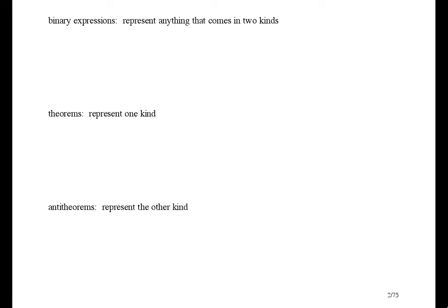The expressions of binary theory are called binary expressions. Some binary expressions are called theorems, and others are called anti-theorems. Binary expressions are used to represent anything that comes in two kinds. The theorems represent one kind, and the anti-theorems represent the other kind. For example, if you think that statements about the world come in two kinds — namely the true statements and the false statements — then you can use binary expressions to represent statements.